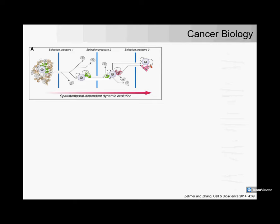Starting with cancer — many of you are aware that it's one of the smartest diseases human beings have encountered. Despite all the different efforts across the world, it has been outsmarting us. We've been constantly learning about the underlying biology. Cancer essentially is an evolution — if you take biologic evolution and cramp it from millions of years into a few years, that's essentially what cancer does.